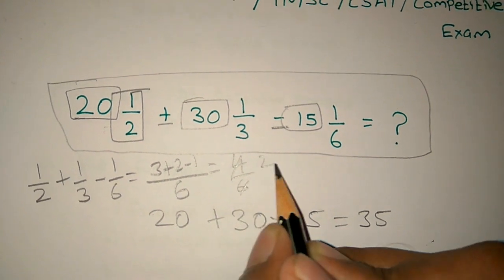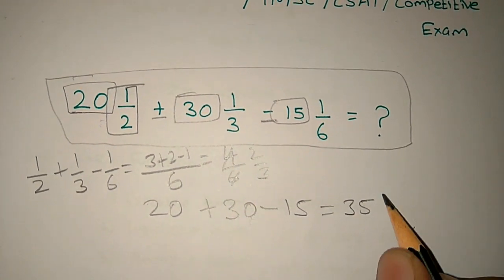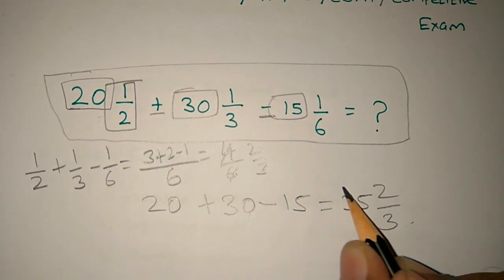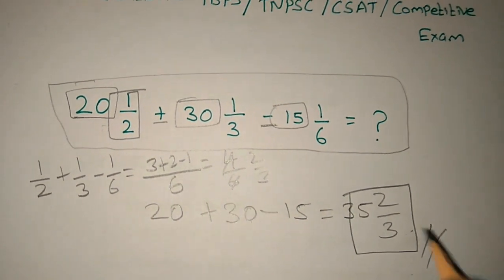We will cancel the LCM and we will get 2 by 3. That is defined as 2 by 3. That is the answer.